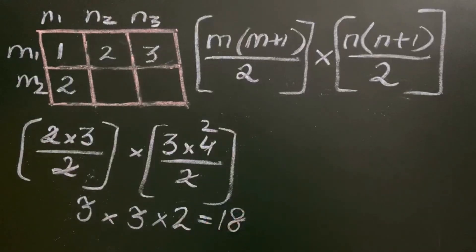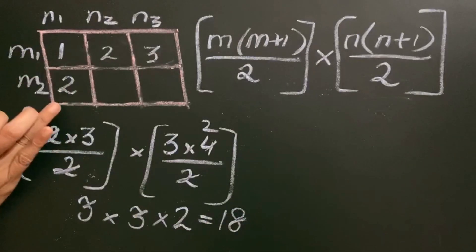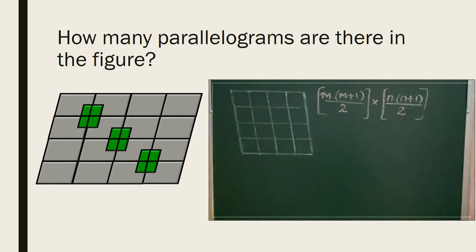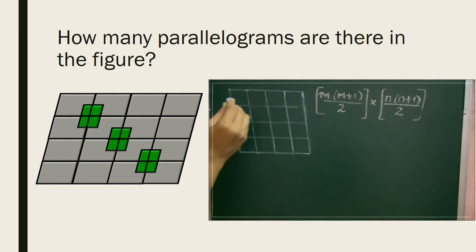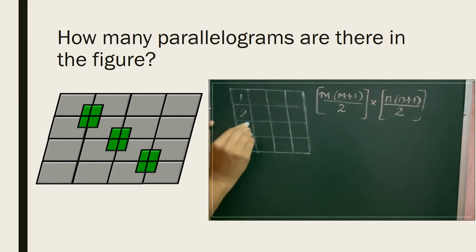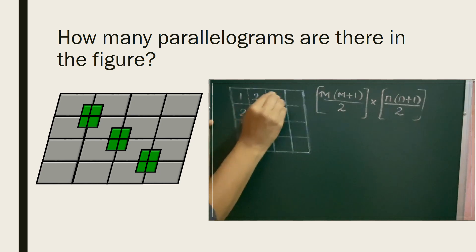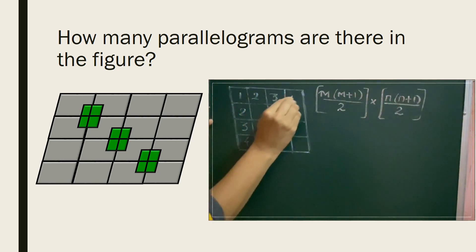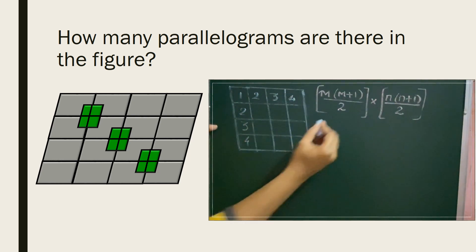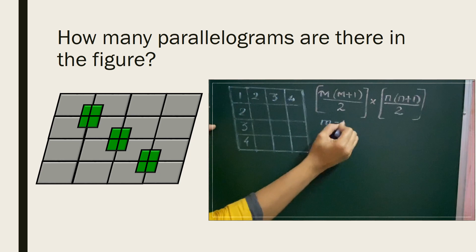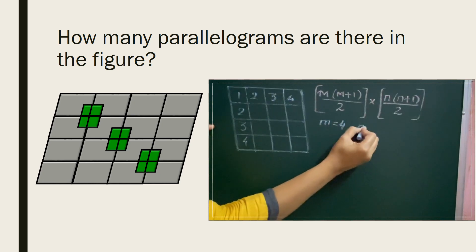There are 18 parallelograms in this figure. For the next figure, the number of rows is 4 and the number of columns is also 4. So m is 4 and n is 4.